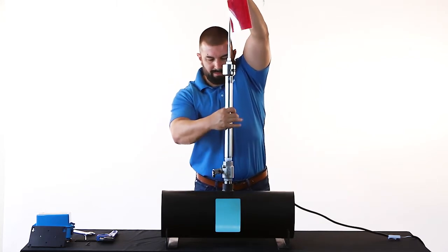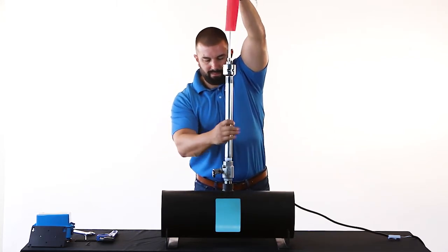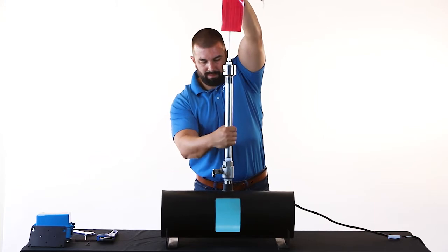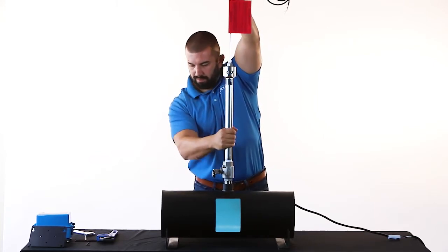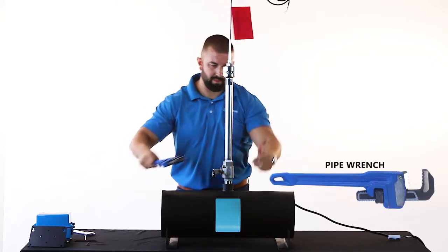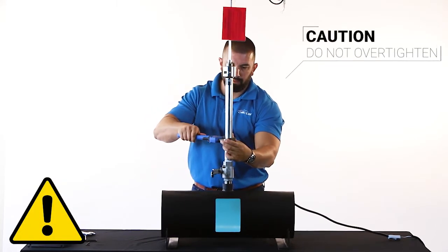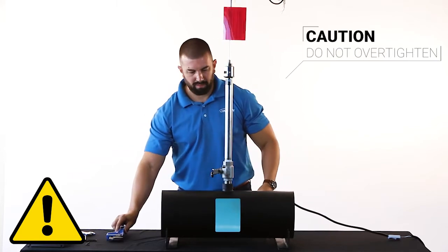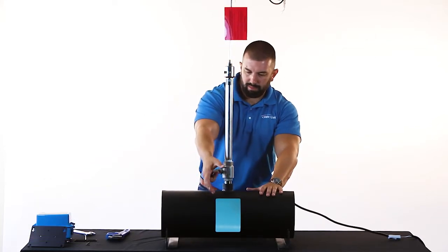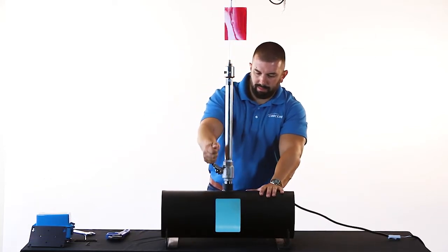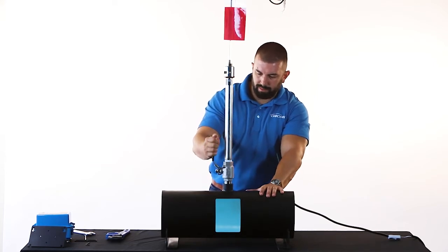Begin threading the hot tap adapter fitting into the fully closed isolation valve by hand. Use a pipe wrench to complete the installation of the hot tap adapter fitting into the valve. Be sure to tighten just enough to prevent leaks. Do not over tighten as you could potentially deform the fitting. Slowly open the isolation valve and confirm there are no leaks before proceeding.